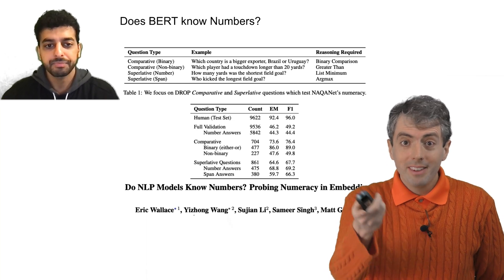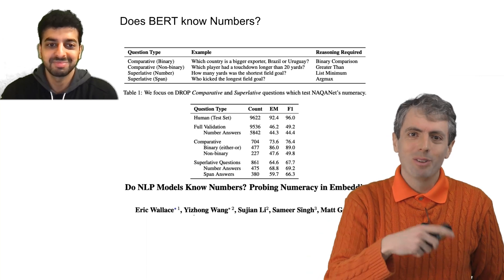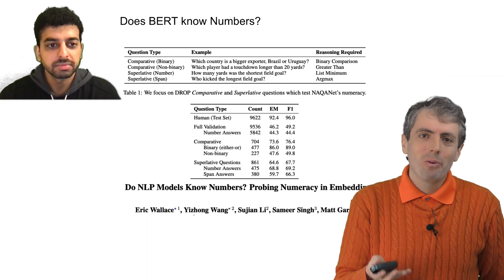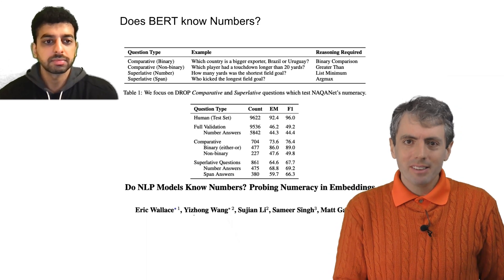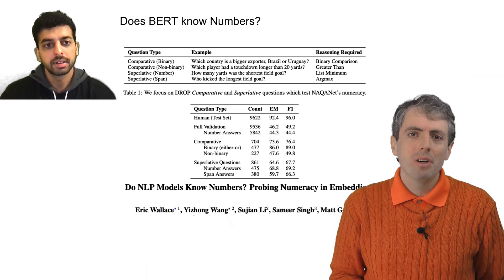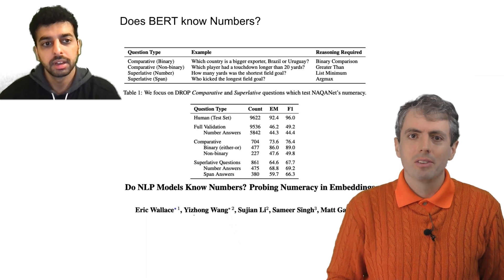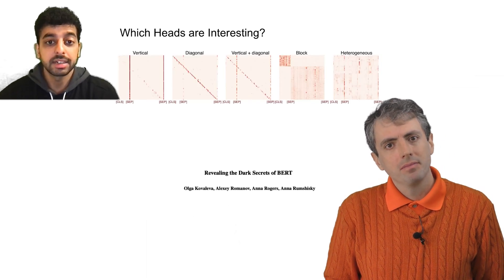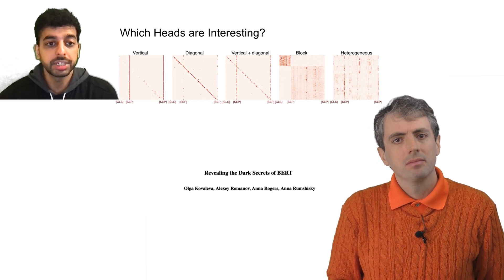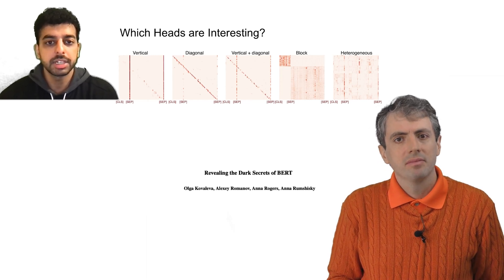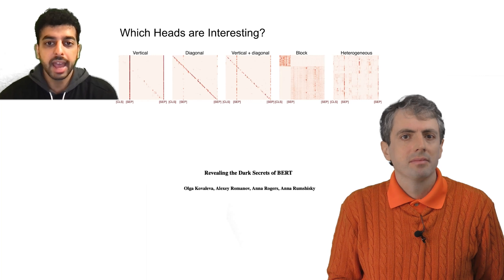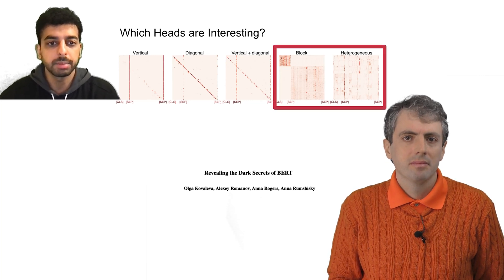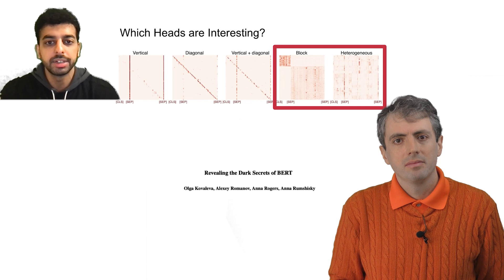The co-first author of this paper is also a former Maryland student I advised, Eric Wallace. It seems that BERT can do quite a bit, but there's still some room for improvement. How do you know which heads are doing interesting things? Kovaleva et al. showed that many BERT heads are essentially just repackaging pre-training information based on their attention patterns. But the heads that aggregate information from all over, or from specific places in the input, seem to be doing more interesting things.